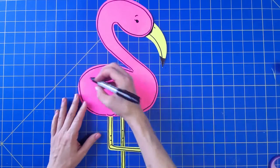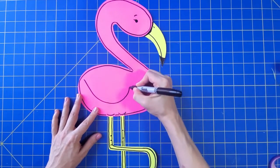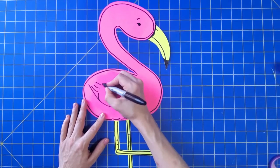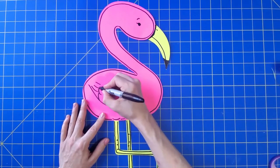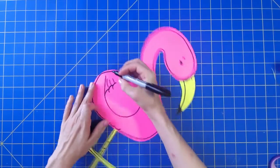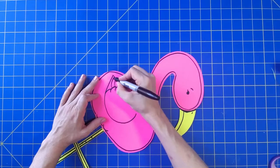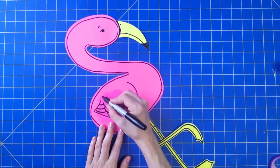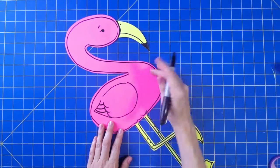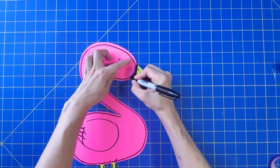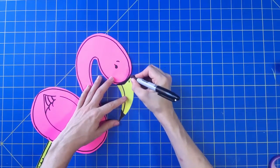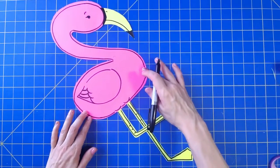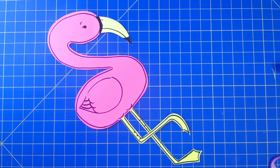And the last thing is I think this flamingo needs a wing. And there it is—your cut paper flamingo. Thanks for watching.